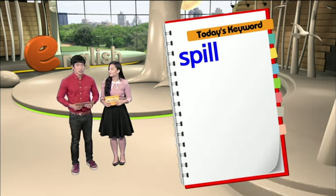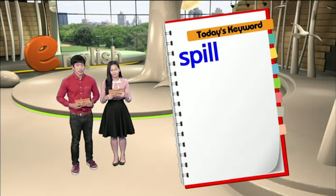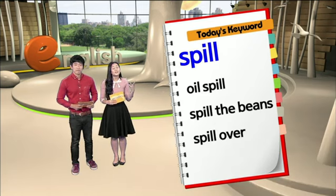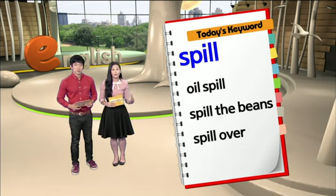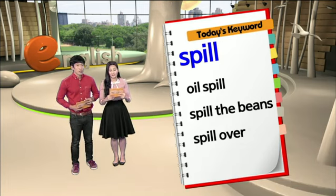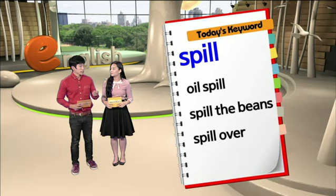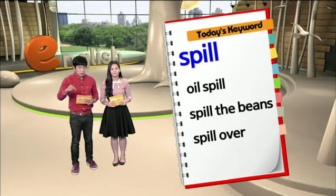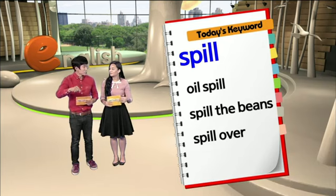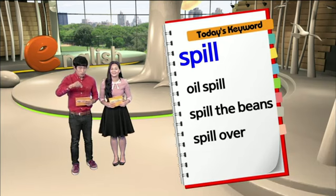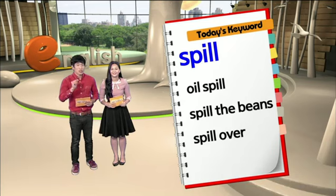Spill과 관련된 재미있는 표현들 몇 가지 소개해 보겠습니다. So the first one is oil spill. Oil spill이라고 하면 oil, 기름이잖아요. 기름을 요리하다가 — cooking oil, 식용유 하다가 한 방울 떨어뜨리는 것도 oil spill이 될 수 있겠지만.